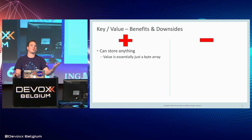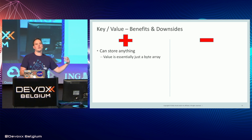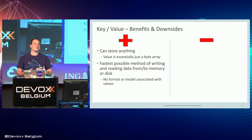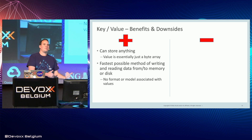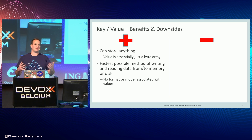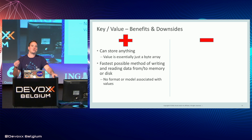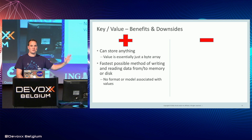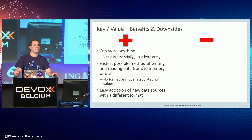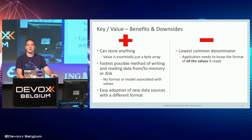Benefits of key-value: first and foremost, you can store everything — it's just byte arrays. Putting bytes on disk or in memory and reading them back is the fastest possible method. Disks just store bytes on a magnetic spindle, same in memory on DRAM. It's also easy to adopt new data sources, especially if the format is different. Today you store JSON documents, tomorrow a picture comes along — fine, you just store it. Downsides: it is the lowest common denominator. Whatever application reads that data has to understand what the bytes actually represent.